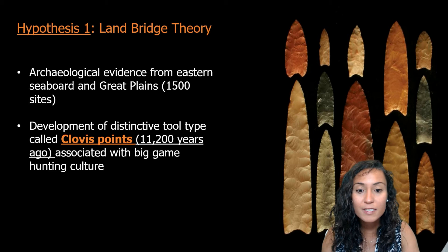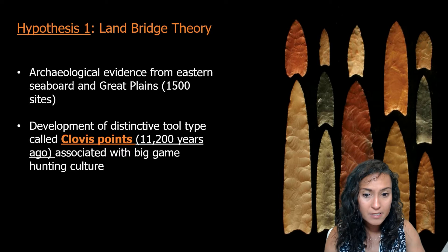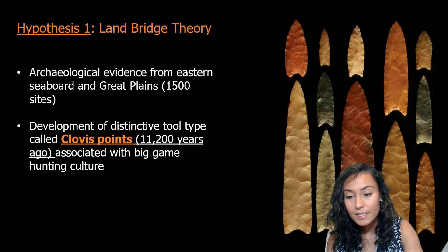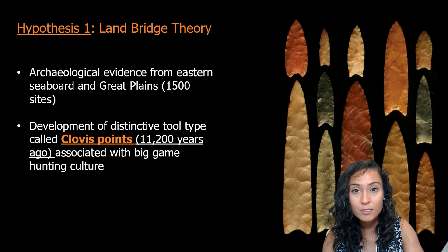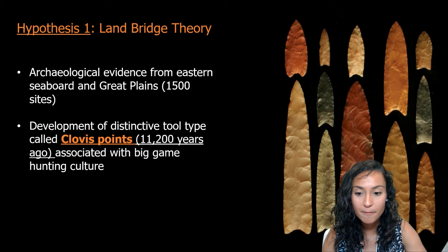Clovis points are associated with big-game hunters who lived off diminishing numbers of large, now extinct animals like mammoths and mastodons. This spear technology could not stop an elephant in its tracks — it could only wound it severely. So they would have had to stalk herds, concentrate on killing stray animals, and sometimes use collaborative techniques to drive these animals into swamps or off ridges.